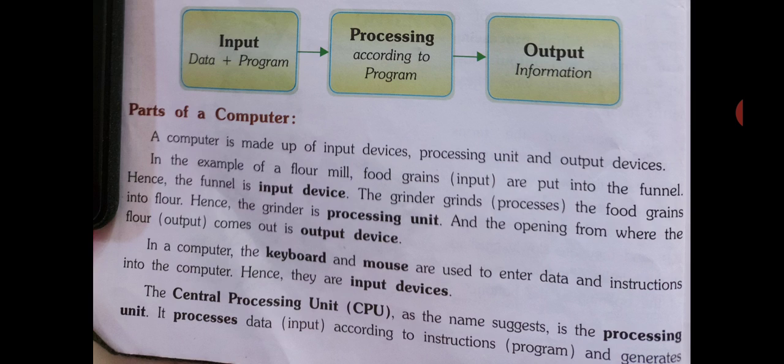Agla point hai parts of a computer — a computer is made up of input devices, processing unit, and output devices. Computer ke part kya kya hai: input devices, processing unit, aur output devices. In the example of the floor mill — food grains put into the funnel, hence the funnel is the input device. The grinder grinds the food grains into floor, hence the grinder is the processing unit. And the opening from where the floor comes out is the output device.